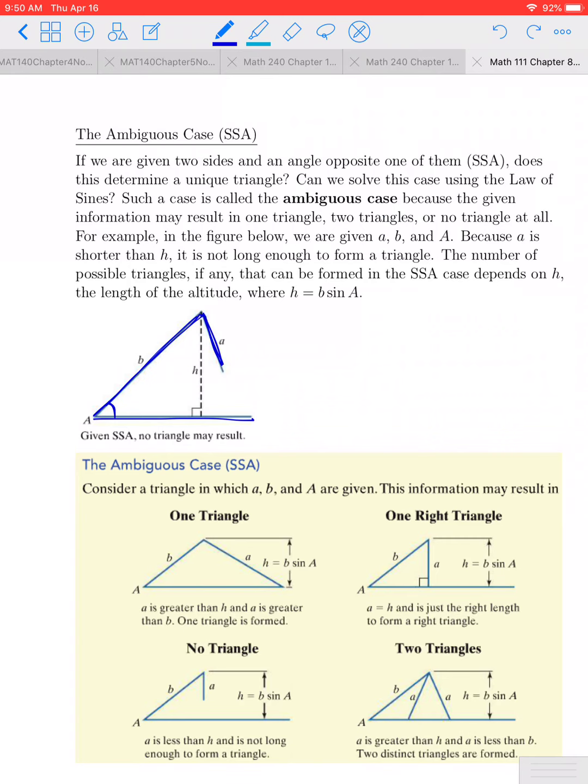So if I were to imagine dropping an altitude down, a perpendicular to the opposite side, that would create a right triangle. So I'm looking at this right triangle here. In that right triangle, the sine of A is the ratio of the opposite over the hypotenuse, that would be H over B. I can then solve it for H by multiplying both sides by B, and we get that H is equal to B times the sine of angle A.